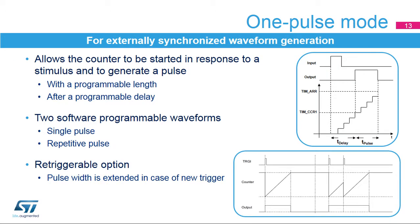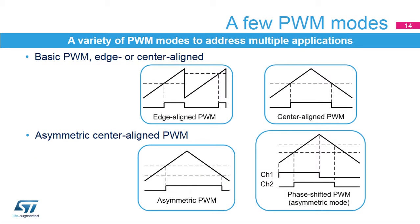One pulse mode is used to generate a pulse of a programmable length in response to an external event. The pulse can start as soon as the input trigger arrives or after a programmable delay. The compare 1 register, or CCR1 value, defines the pulse start time, while the auto-reload register, or ARR value, defines the end of pulse. The effective pulse width is the difference between ARR and CCR1 register values. The waveform can be programmed for a single pulse or a continuous pulse train. One pulse mode also offers a retriggerable option, where a new trigger arriving before the end of the pulse will cause the counter to be reset and the pulse width extended accordingly.